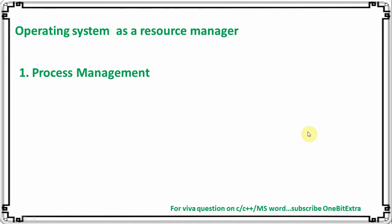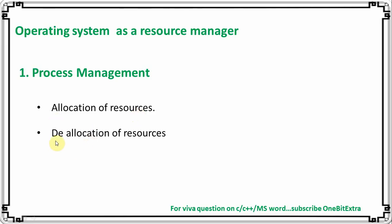The functions performed by the operating system as a resource manager include process management. Whenever any process needs any type of resource, the operating system maintains track of each resource. When a process demands a resource, it implements some policy to determine who will get the resource.